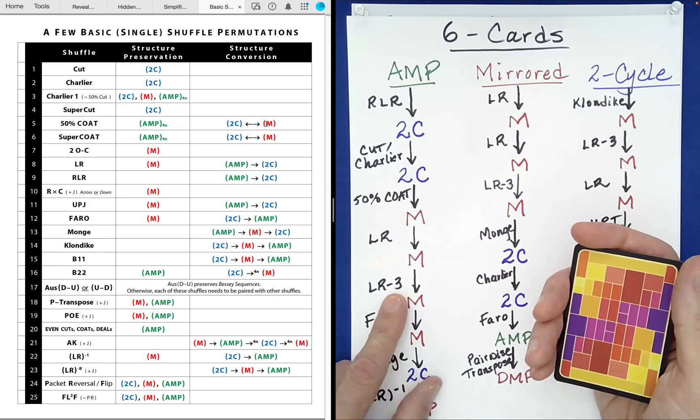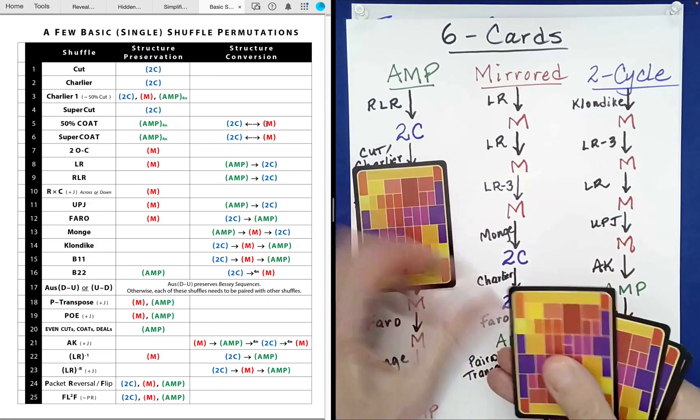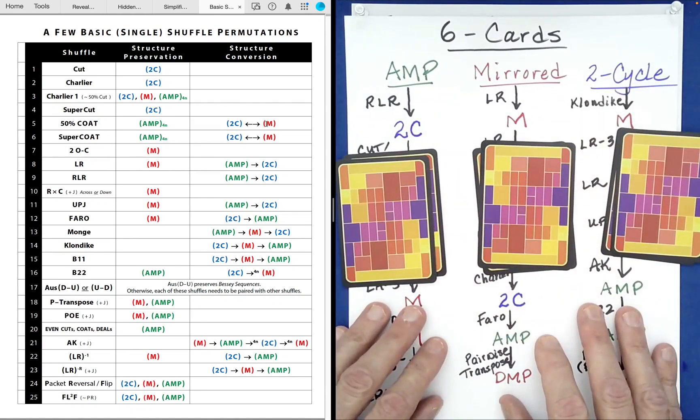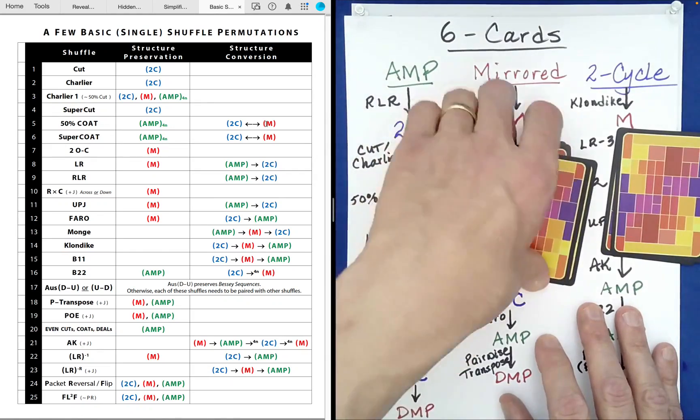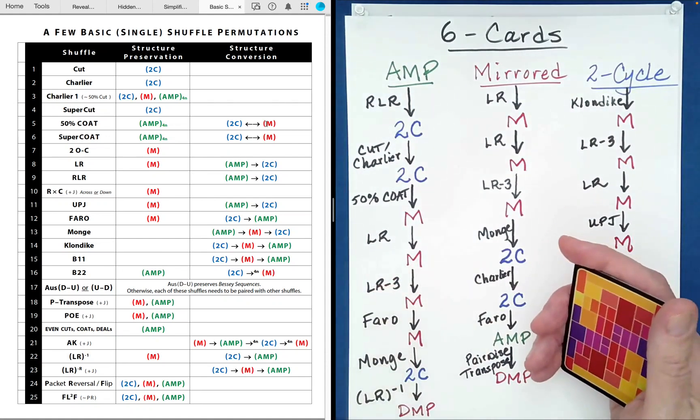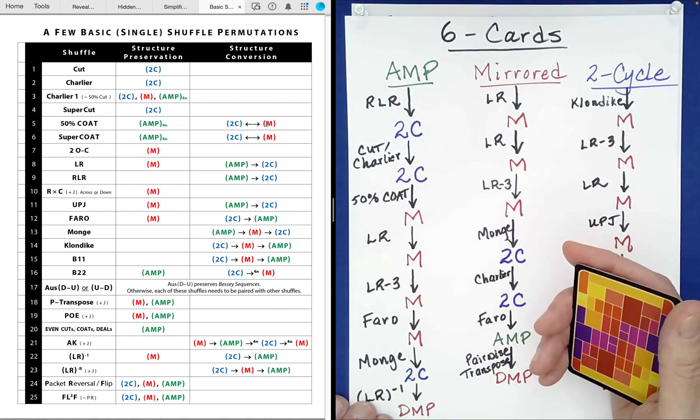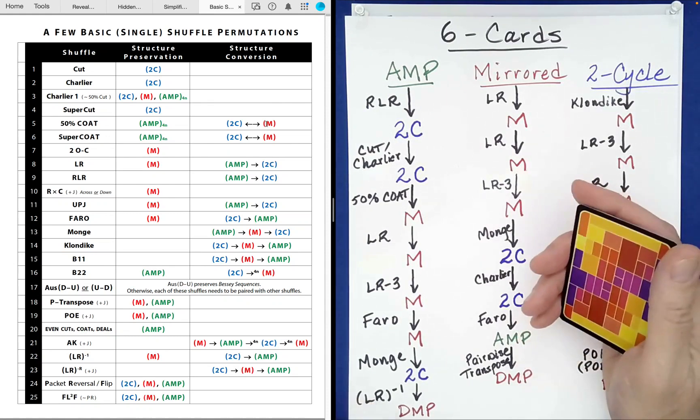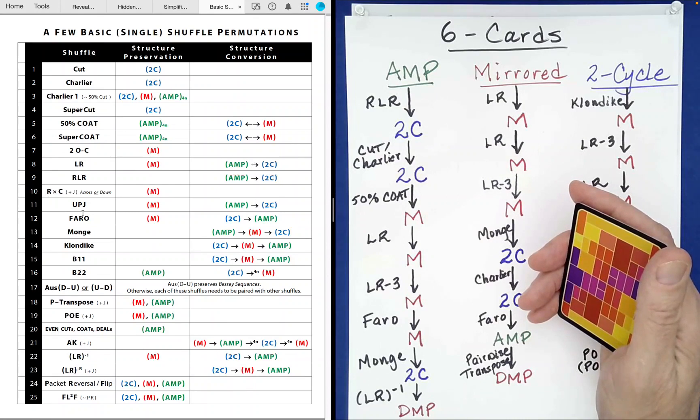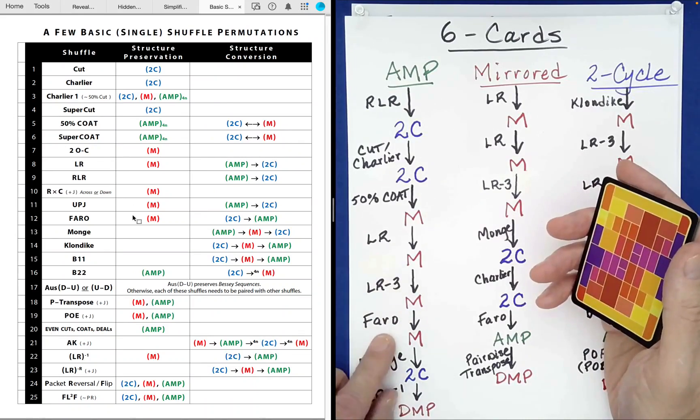Okay? Now because the number three also divides evenly into six, we can deal into three piles like so. With random stacking from left to right or right to left. So let the spectator choose that. And you can repeat this LR3 as many times as you would like or the spectator asks for. And now if we come over here to the faro, look up the faro, it's line 12. This also preserves mirrored structures, the faro.